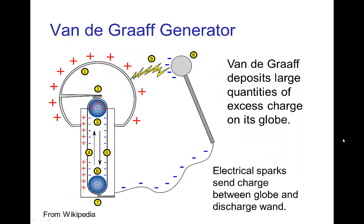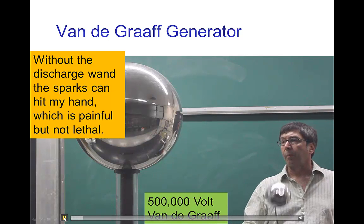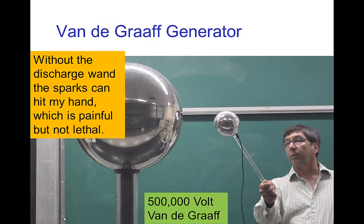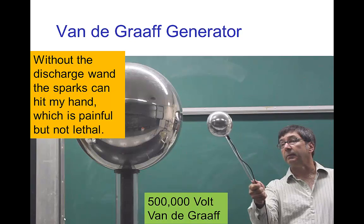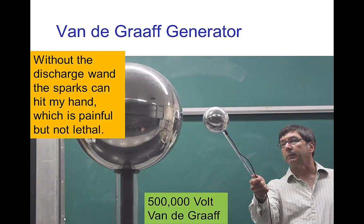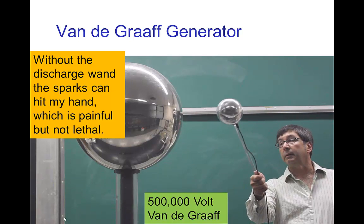Now, we can develop much higher amounts of charge by using devices like a Van de Graaff generator. So, let's see an example of this. This is a half-million-volt Van de Graaff. You can see the sparks coming off of it. So, very large amount of charge.